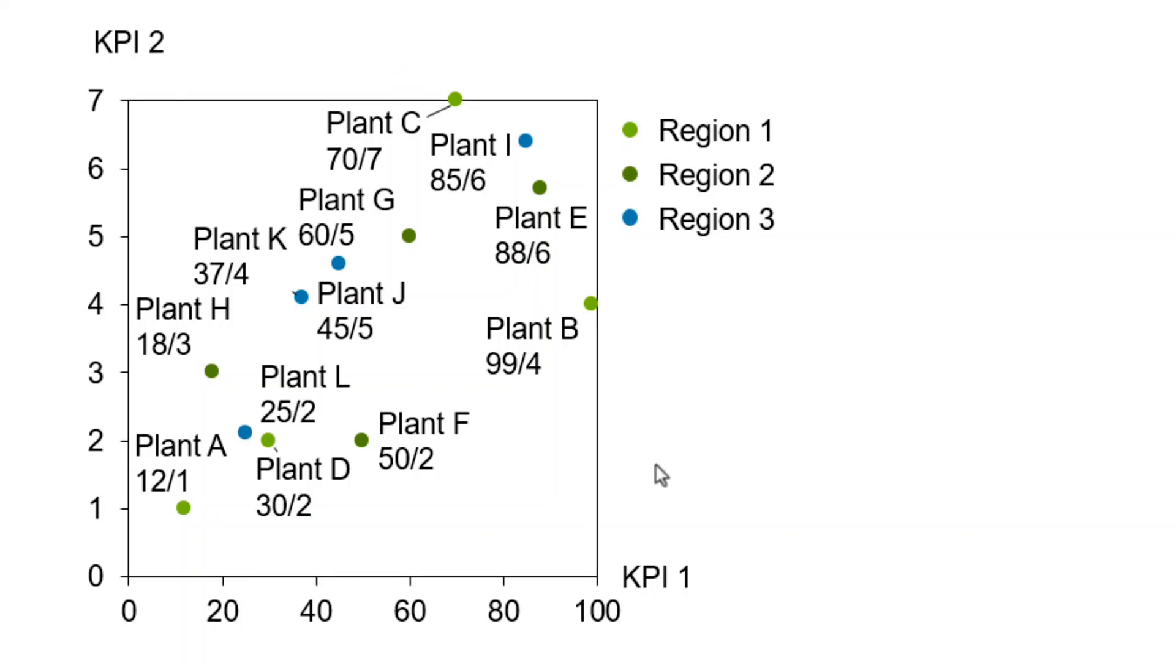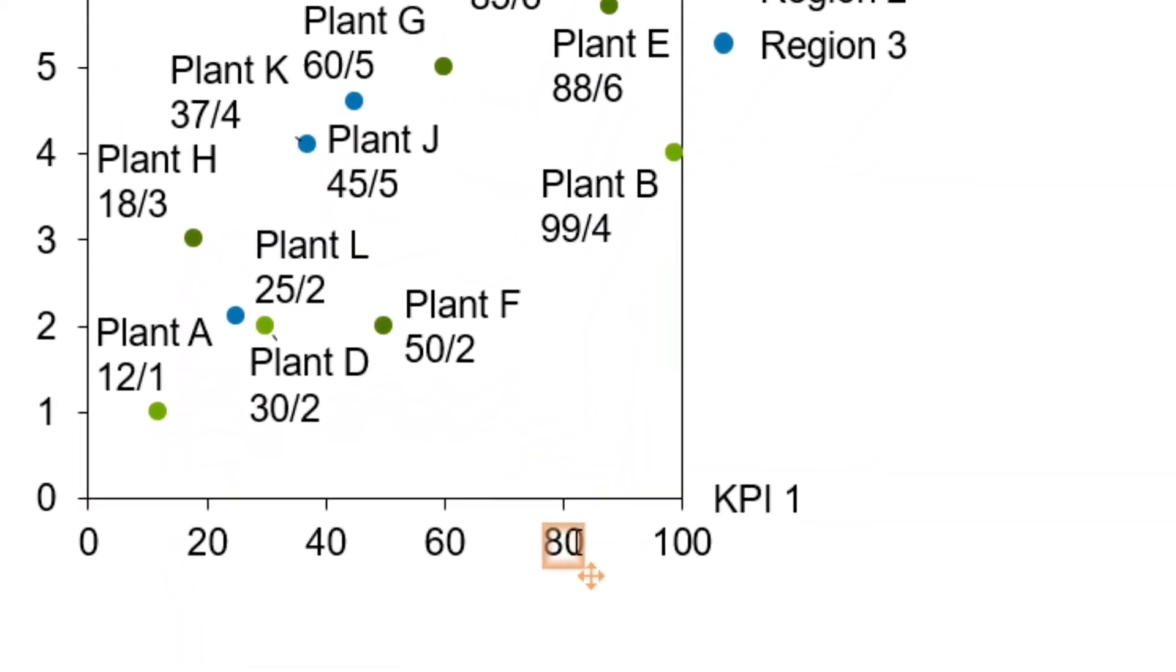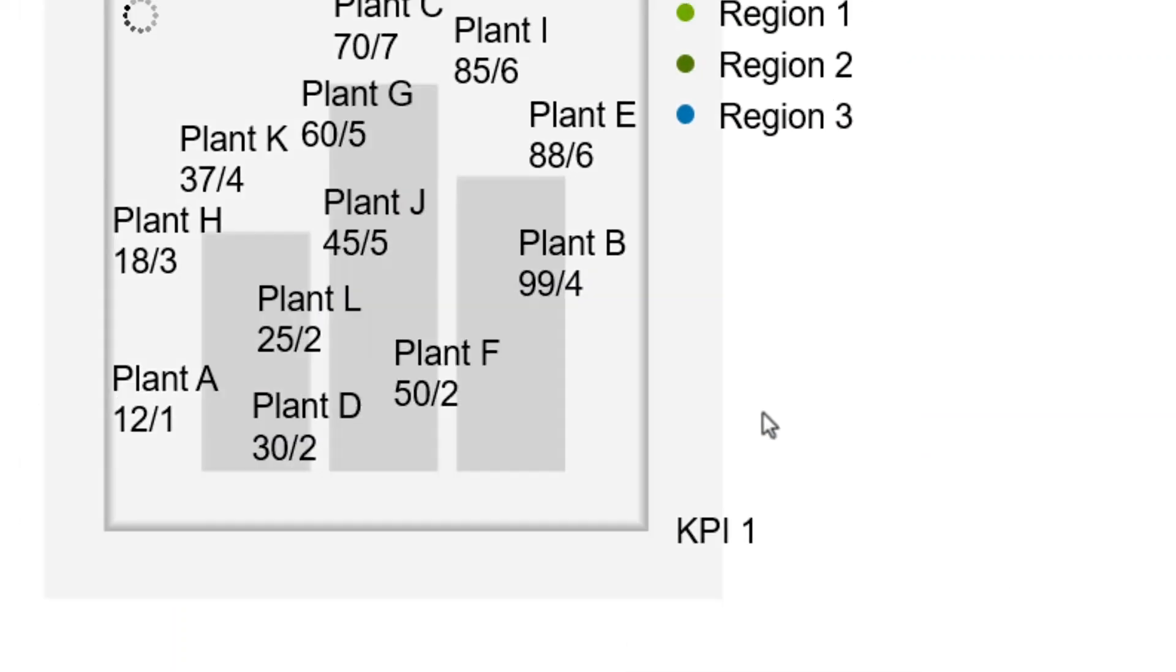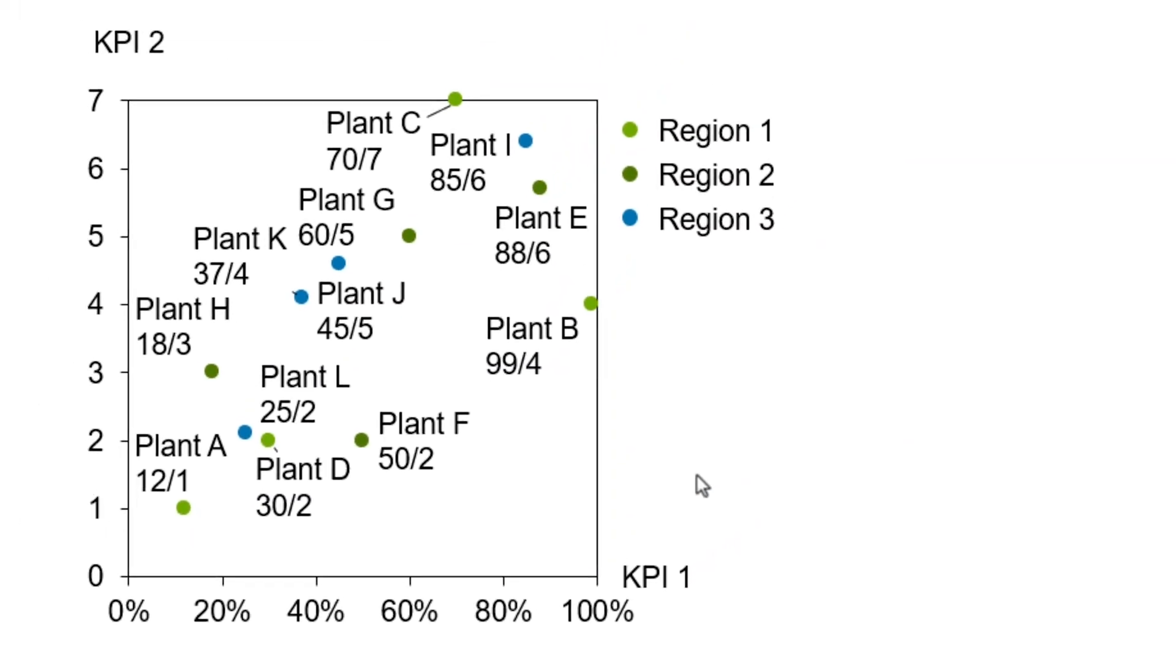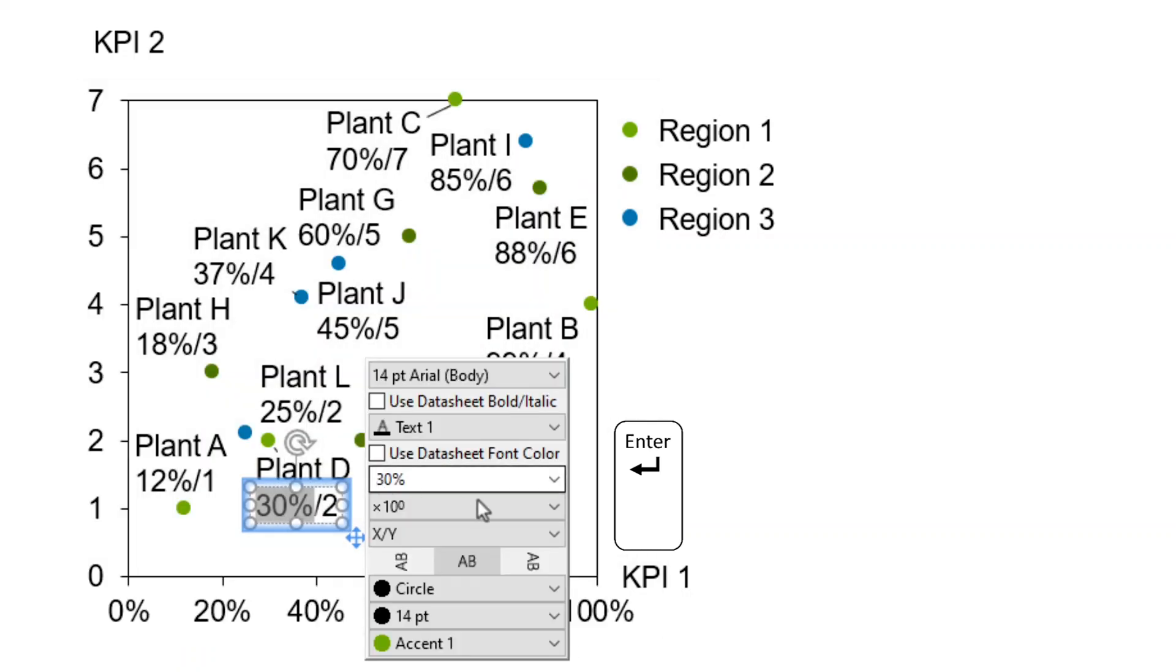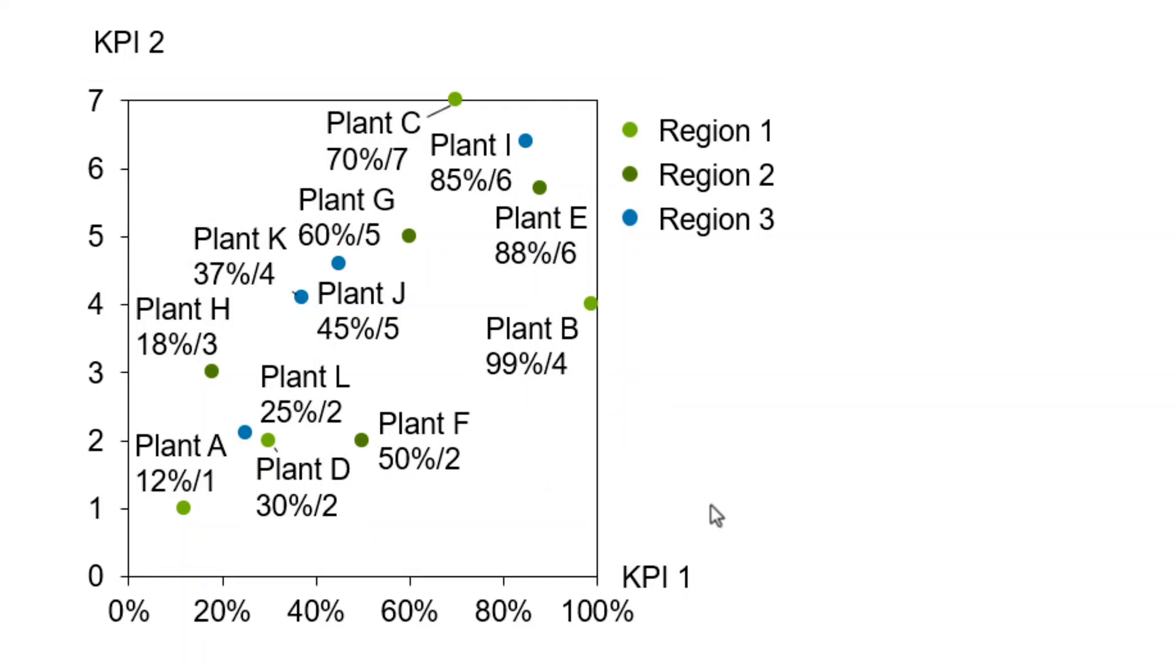Finally, as the KPI1 figures are percentage values, left-click onto any X-axis label and add a % sign to the number format control box. All labels of the X-axis are changed accordingly. Then repeat this for the point labels by left-clicking onto the KPI1 value in any of the point labels and typing in a % sign into the control box. Again, the change is applied to all labels of that type.